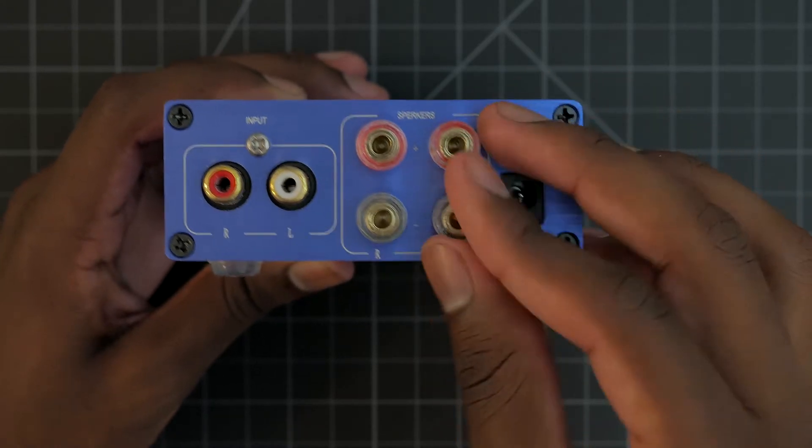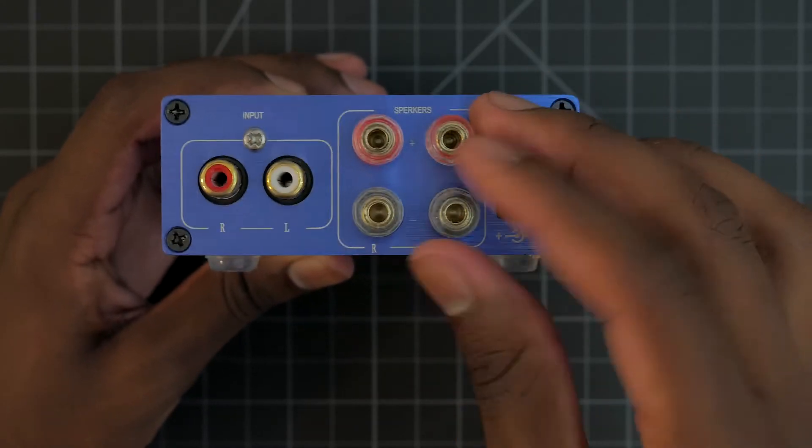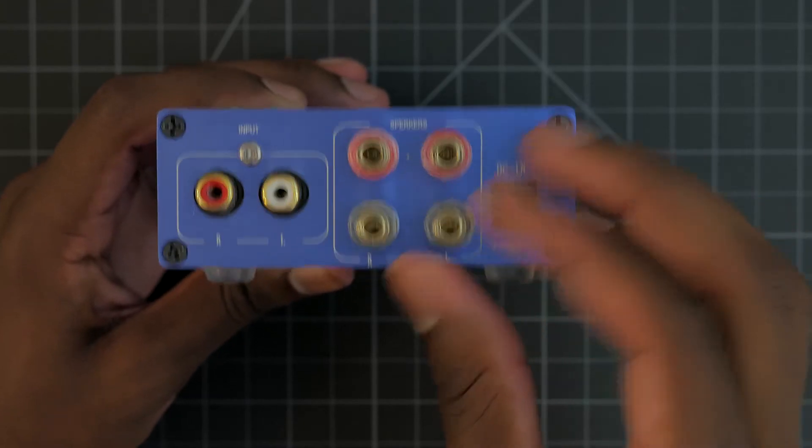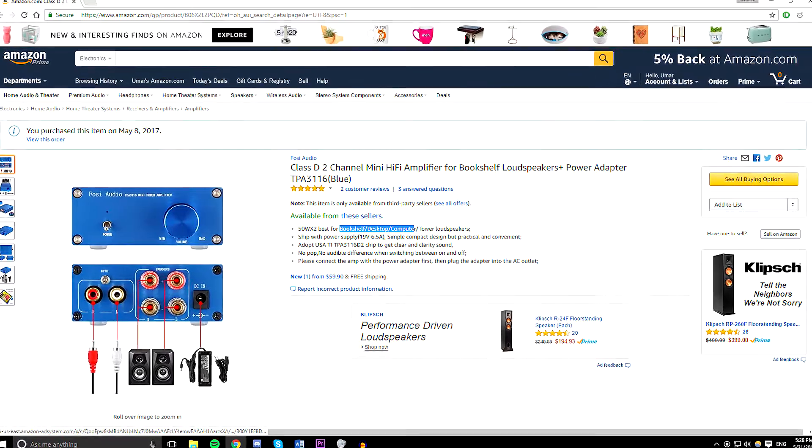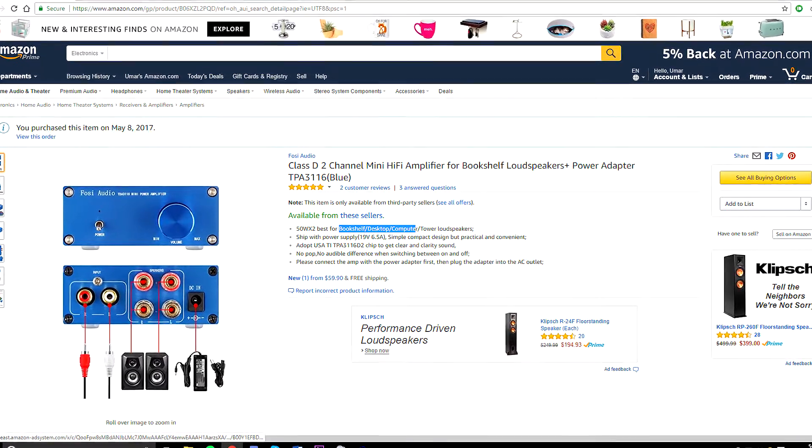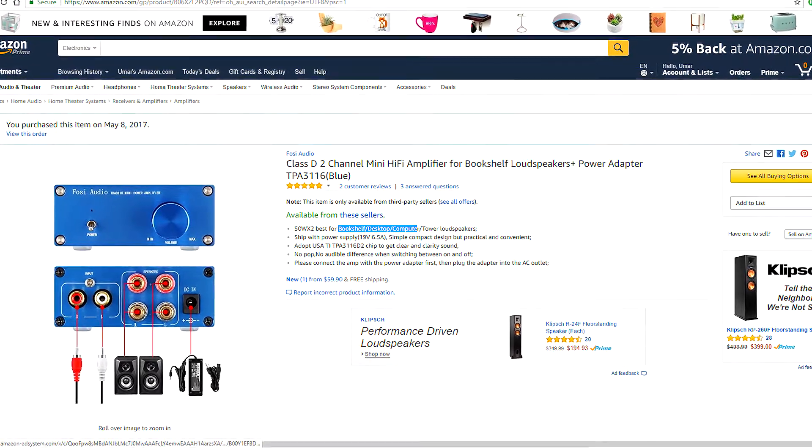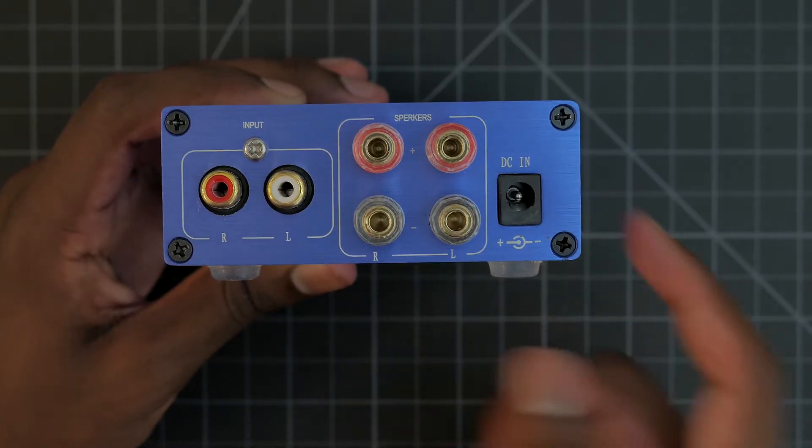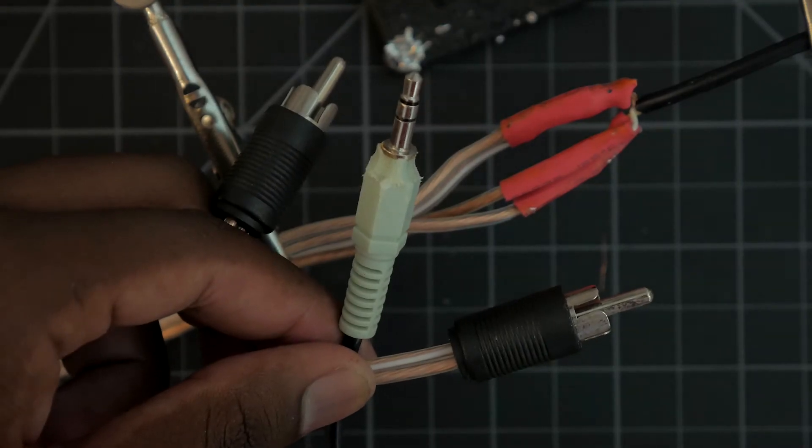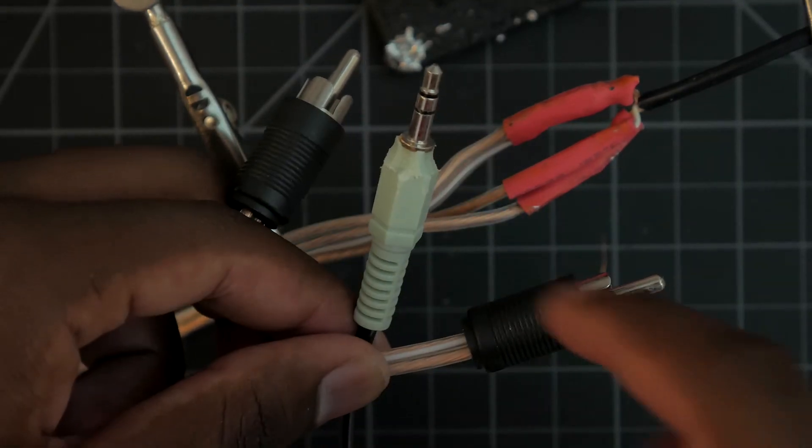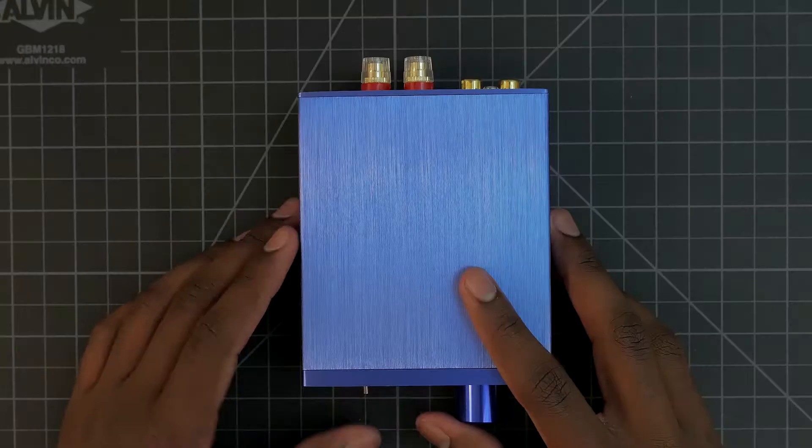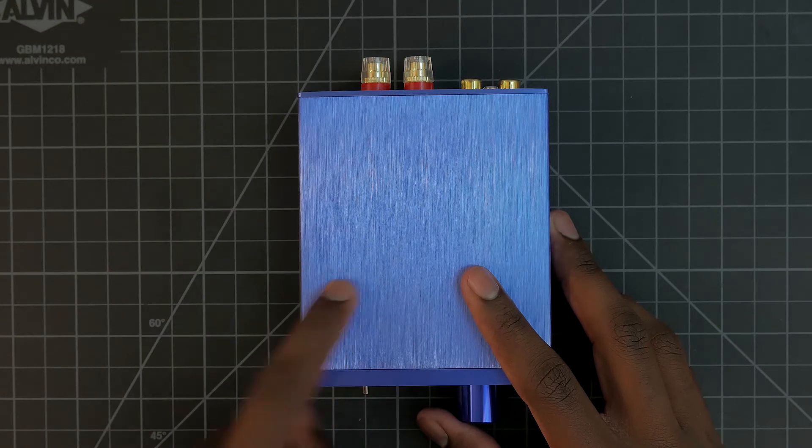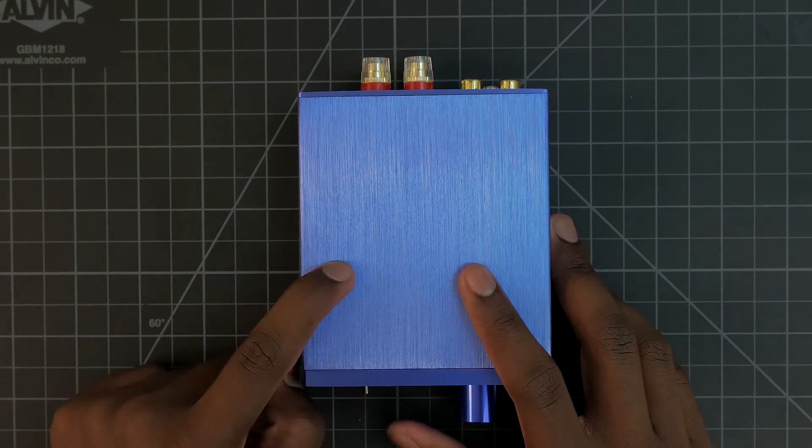For the inputs, I understand why they use RCA because they are kind of a standard, but due to the size of this amp, I could see a lot of people trying to put this on their desk for use with desktop speakers. In fact, on their Amazon page they say good for bookshelf and desktop speakers. Well, a lot of those people want to connect their phone or their computer, in which case they need an aux cable. I simply made my own aux to RCA cable, but this I feel like is an unnecessary step, as there could have just been an aux jack as a secondary option from the beginning.